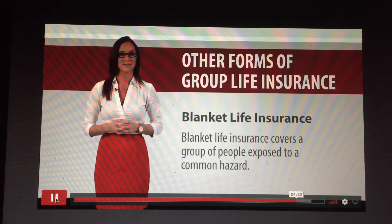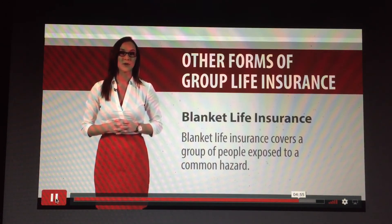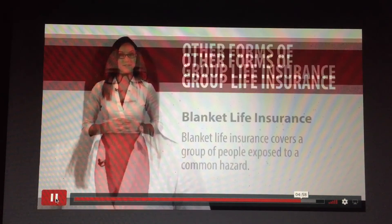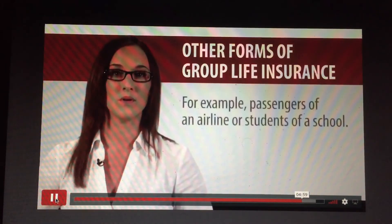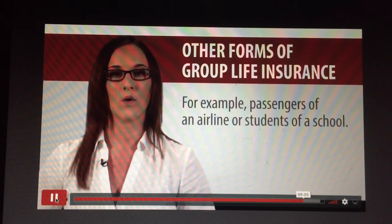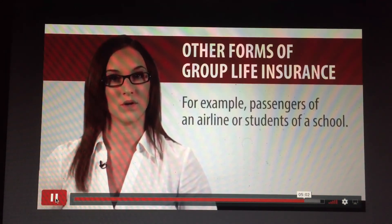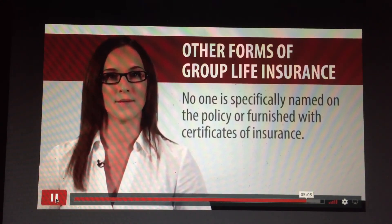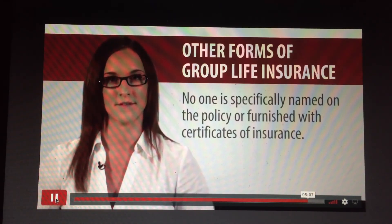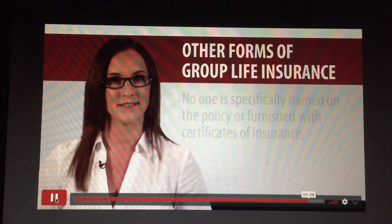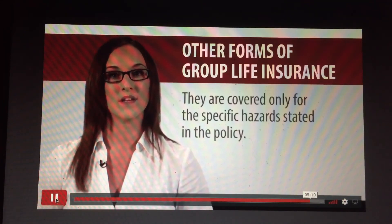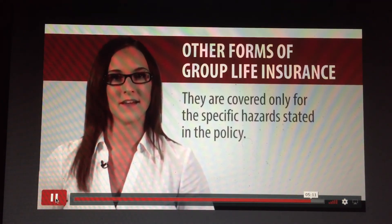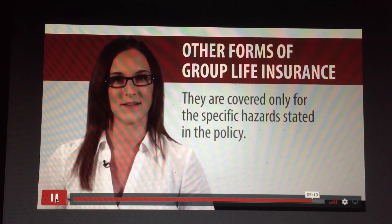Blanket life insurance covers a group of people exposed to a common hazard — for example, passengers of an airline or students of a school. No one is specifically named on the policy or furnished with certificates of insurance, and they are covered only for the specific hazards stated in the policy.